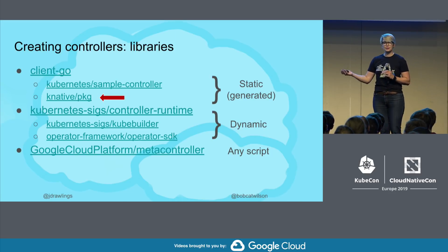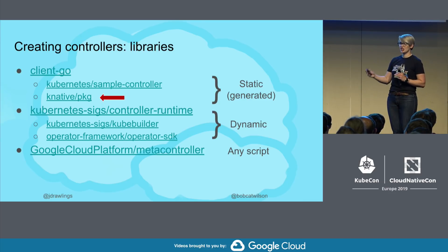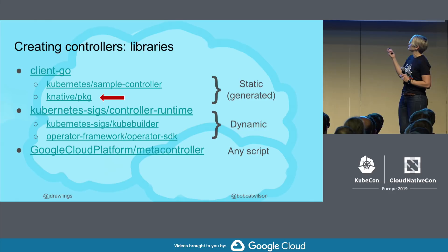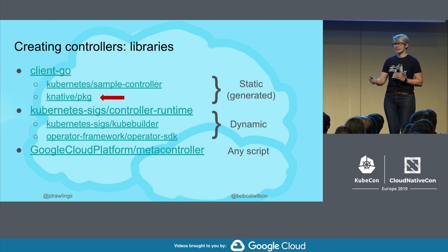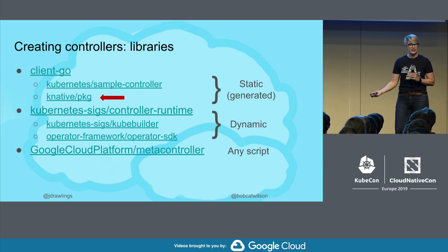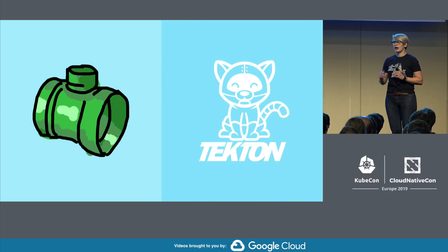There are a few different libraries you can use for implementing this. They roughly fall into two camps: ones based on client-go, which are about statically generated files — whenever you change your CRD definitions you have to regenerate the code to interact with them — and ones based on the controller runtime, which are more dynamic and use reflection to inspect your types while running. For Tekton Pipelines we're using Knative PKG because we started out in the Knative project and it works pretty well.